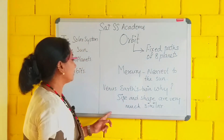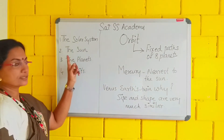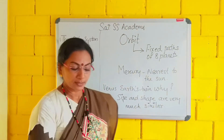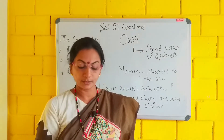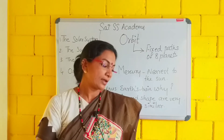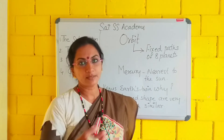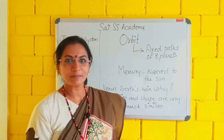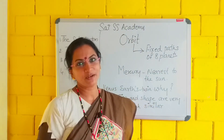That is the last point. We covered four topics here: the solar system, the sun, the planets, and the orbits. In the next class I will take four more points to complete this chapter — the Earth, the moon, asteroids, and meteoroids. I hope you liked my video. Please subscribe, share, and comment. Thank you.